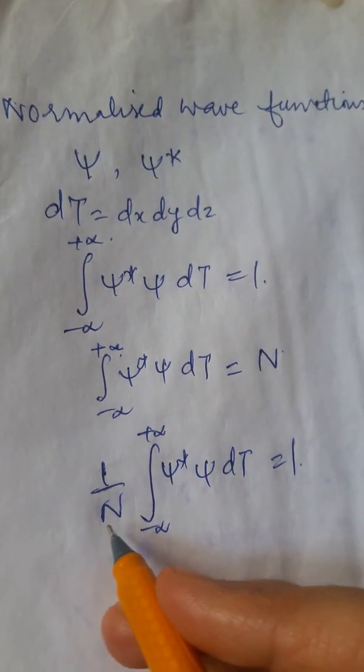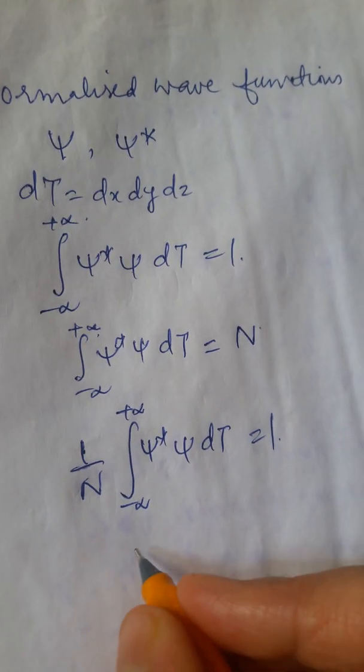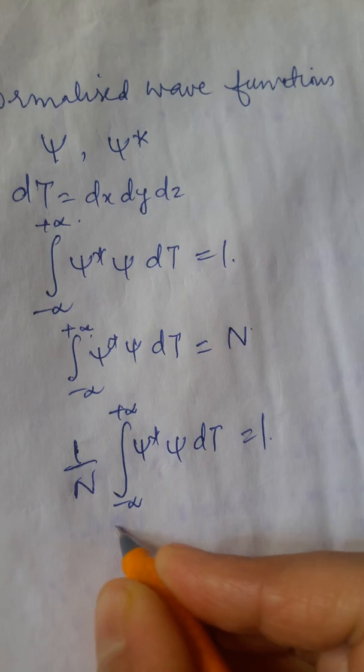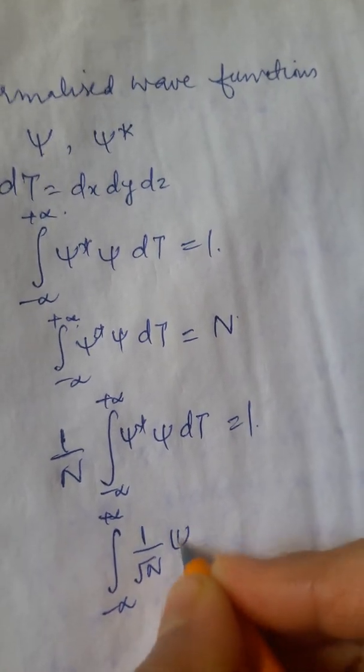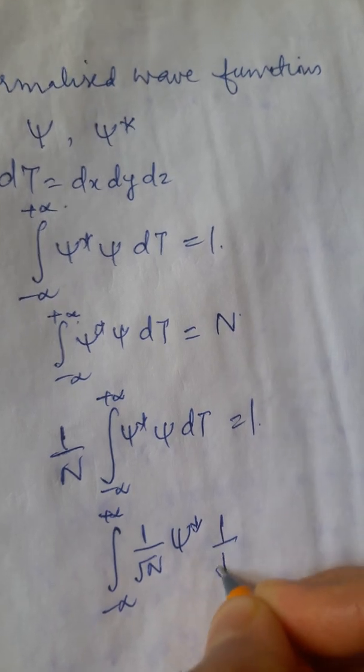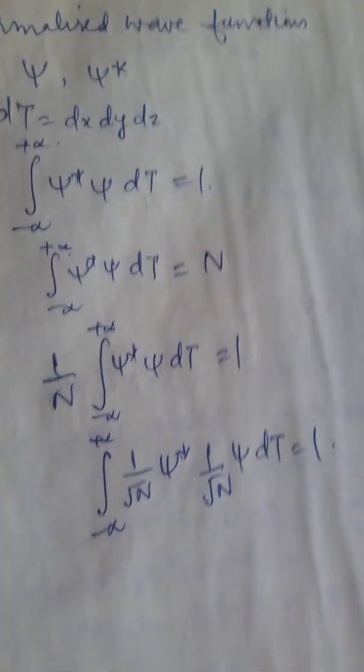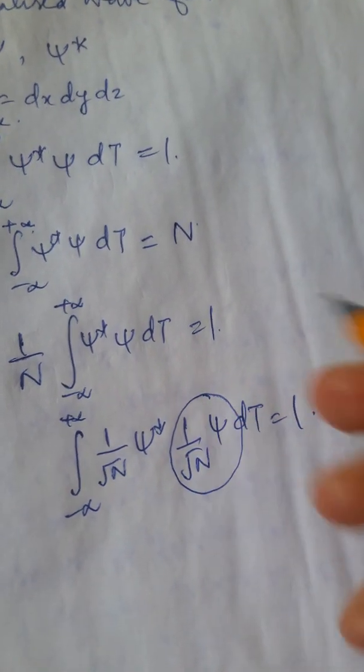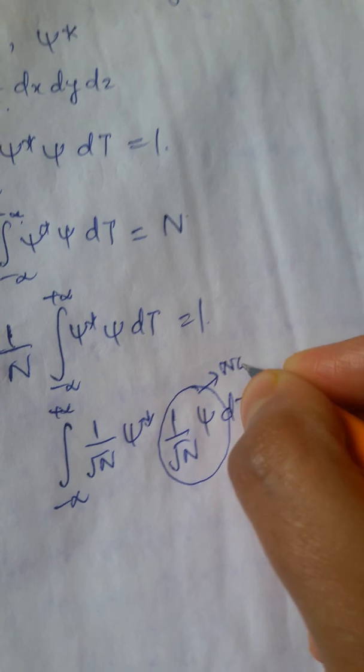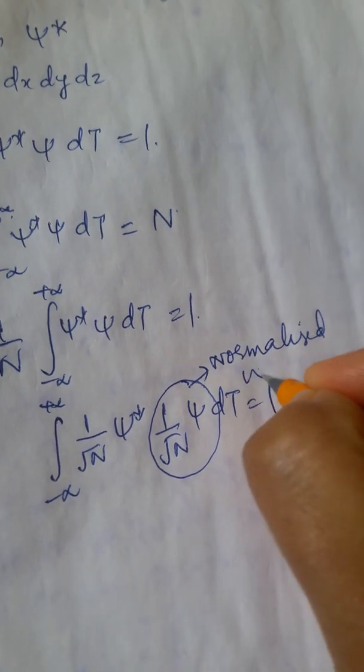Then we can also choose to distribute this 1/N between the wave function and its complex conjugate. So, we write ∫ from -∞ to +∞ (1/√N)ψ* (1/√N)ψ dτ = 1. This factor (1/√N)ψ is called the normalized wave function.